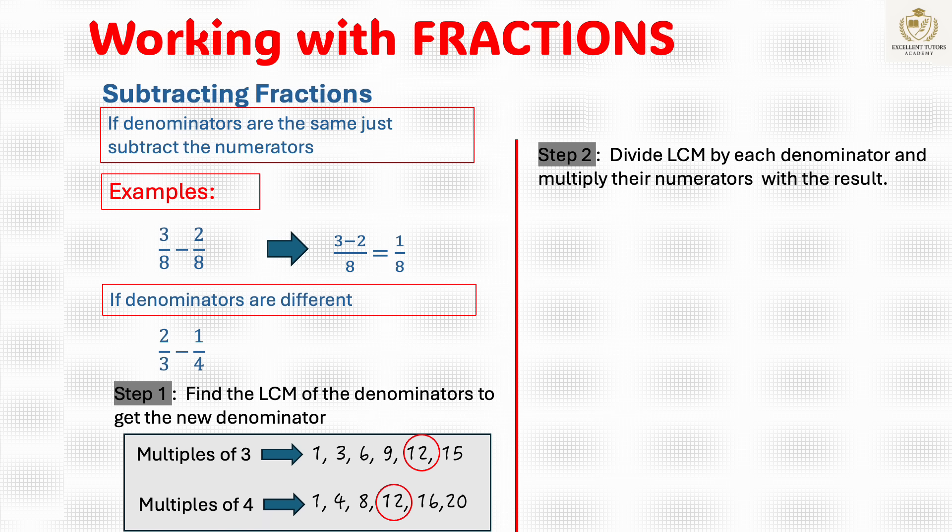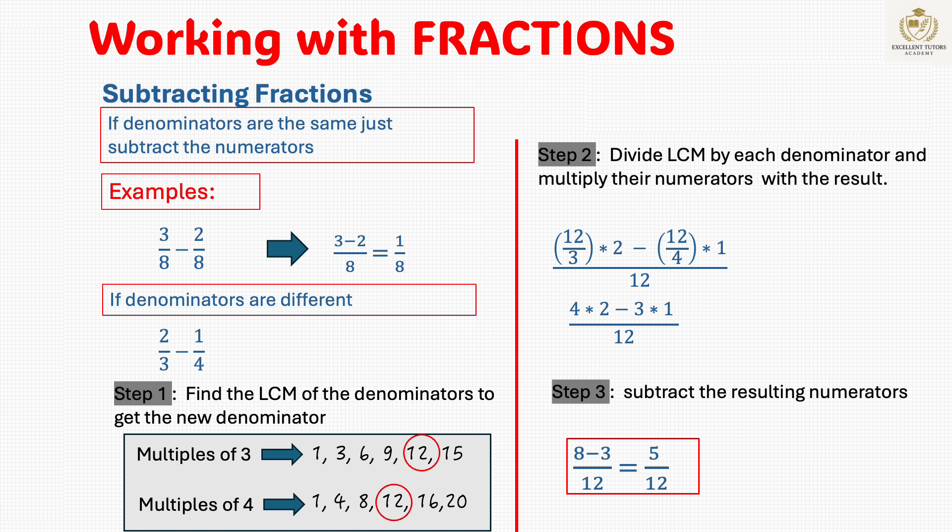Step 2: Divide the least common multiple by the denominator and multiply the numerator with the results. 12 divided by 3 times 2 minus 12 divided by 4 times 1 all over 12. That gives us 8 minus 3 all over 12, which equals 5 over 12. Therefore, 2 thirds minus 1 fourth is 5 twelfths.